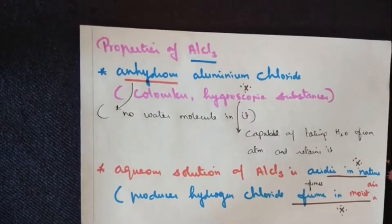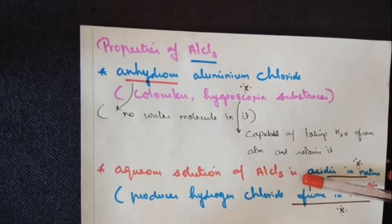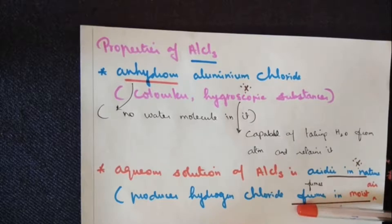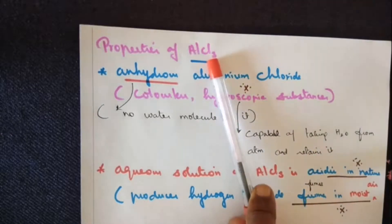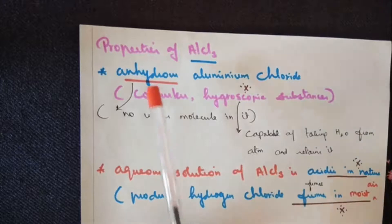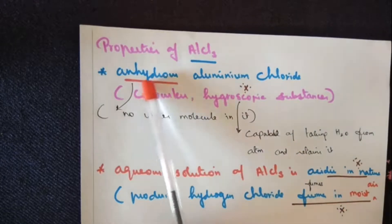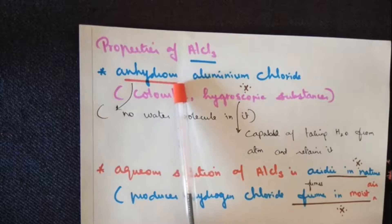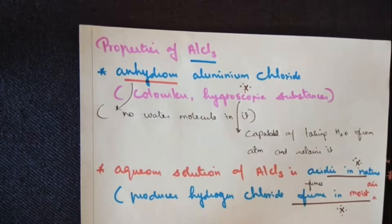Moving on to the properties of aluminium chloride. From a one mark point of view, these properties are very important. Aluminium chloride exists in two forms mainly: anhydrous aluminium chloride and aqueous solution of aluminium chloride. This word anhydrous you will come across in Friedel Crafts alkylation and acylation reactions.